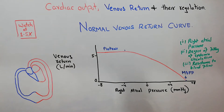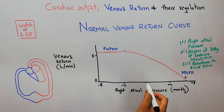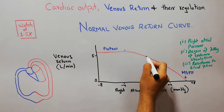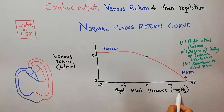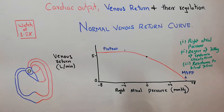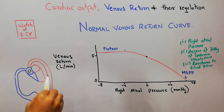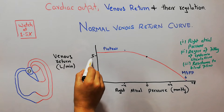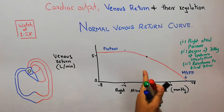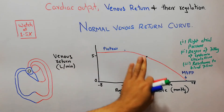To discuss the venous return curve: normally, at a normal right atrial pressure of zero millimeters of mercury, the venous return is 5 liters per minute. So in a normal person with a right atrial pressure of zero, the venous return is 5 liters per minute.